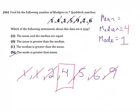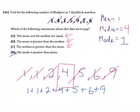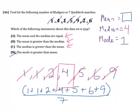Lastly, to find the mean — and to see whether the mean is equal to, greater than, or less than the median — we need to add up all of our data: 1 plus 1 plus 2 plus 4 plus 5 plus 6 plus 9. Add those all up, then divide by the number of numbers. There were 7 Quidditch matches, so we divide by 7. Whatever we get will be the mean, and then we can answer which statement is true: is the mean bigger than the median, equal to the median, or less than the median?